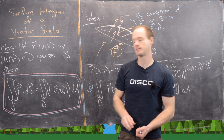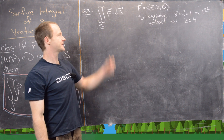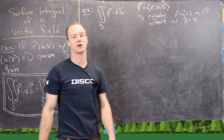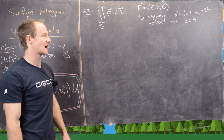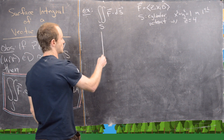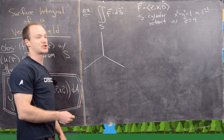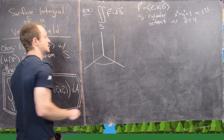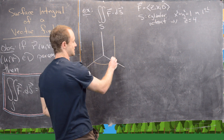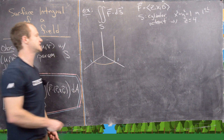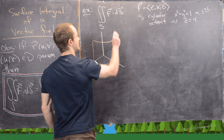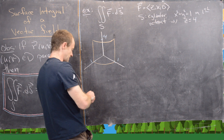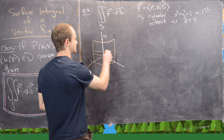For our example, we'll compute the surface integral over the vector field F = ⟨Z, X, 0⟩, where the surface is the cylinder with radius 1 in the first octant with Z less than or equal to 4. Drawing a picture: it's above the first quadrant, a unit cylinder going through 1 along the X and Y axes, up to height 4 — just that sheet bent in the first octant. The first octant means X, Y, and Z are all greater than or equal to 0.